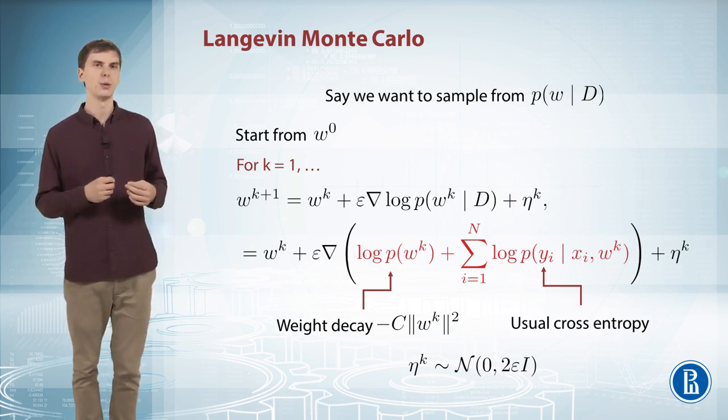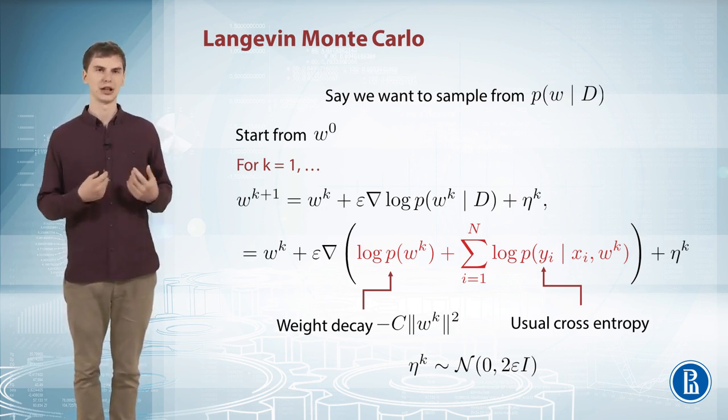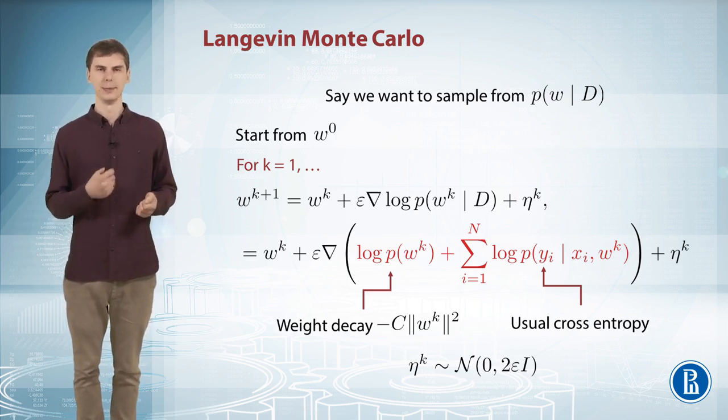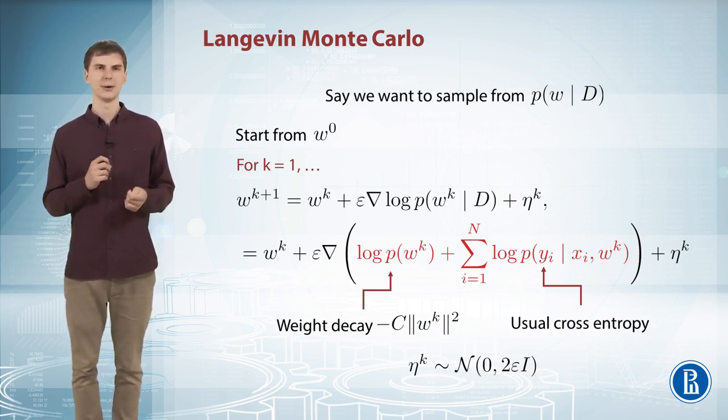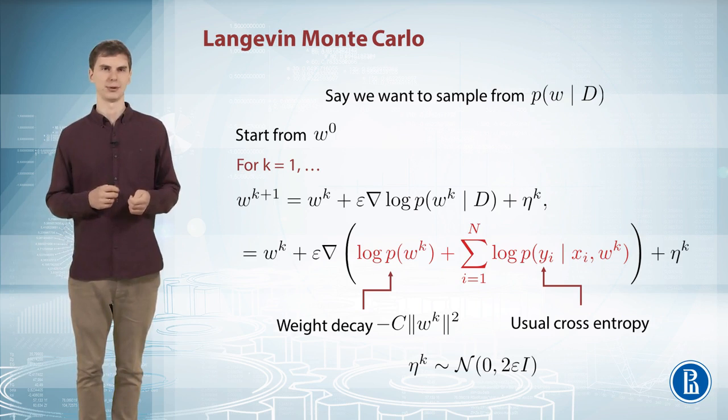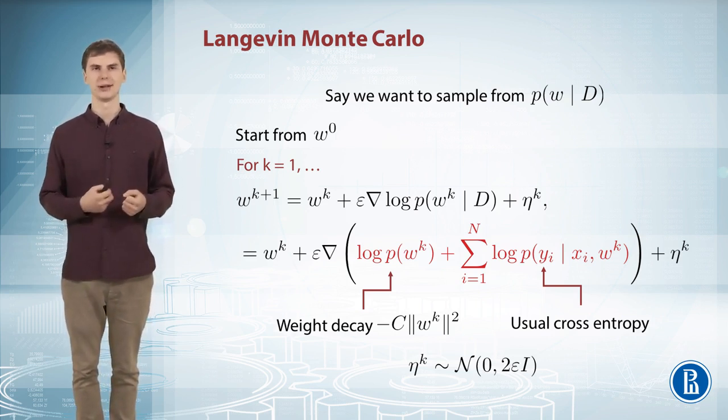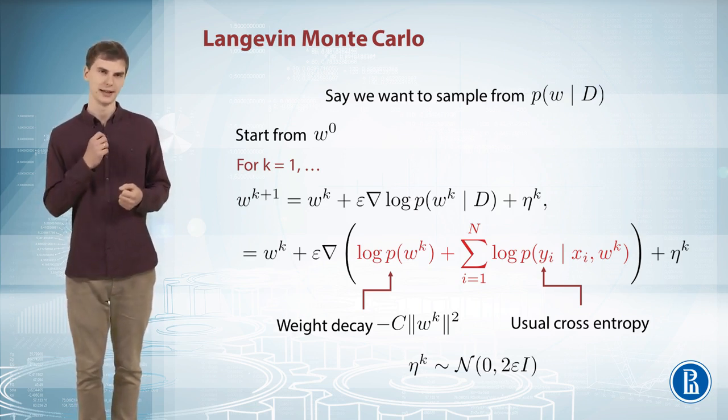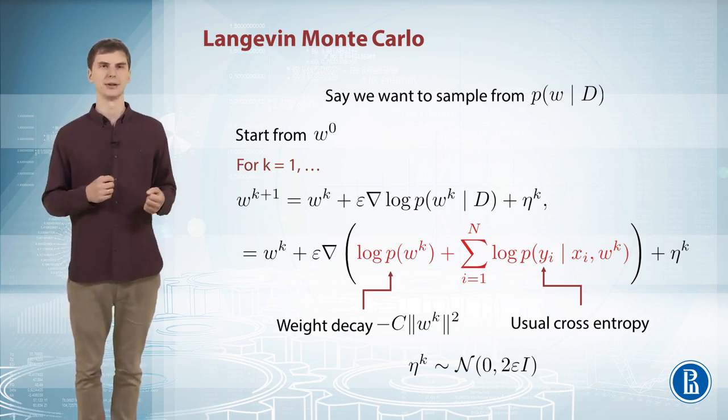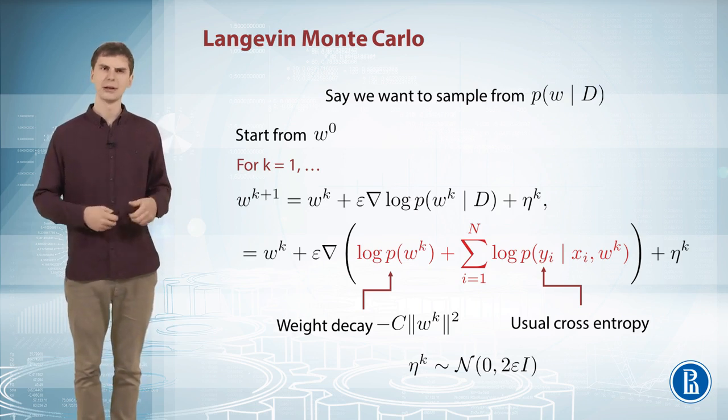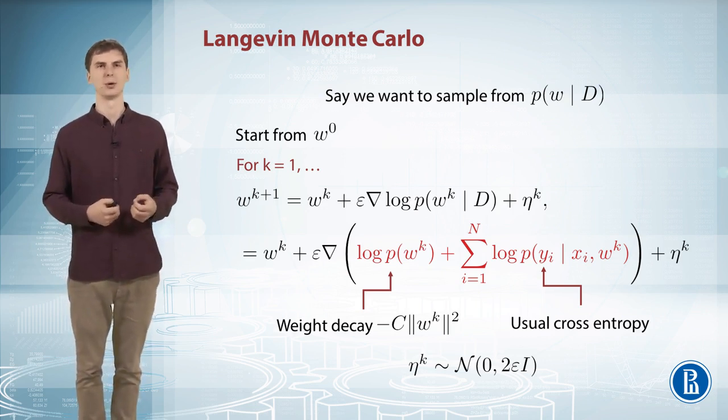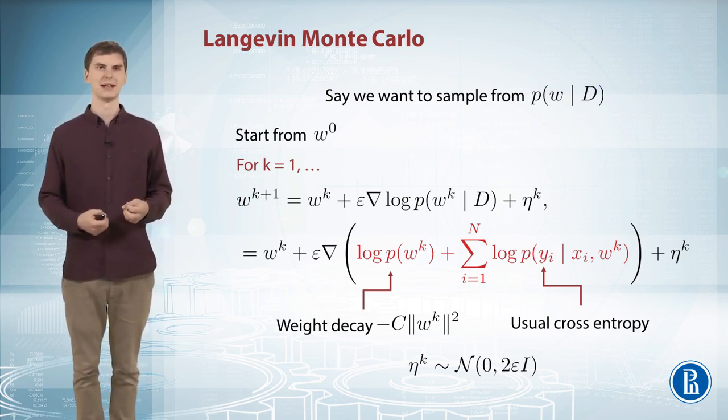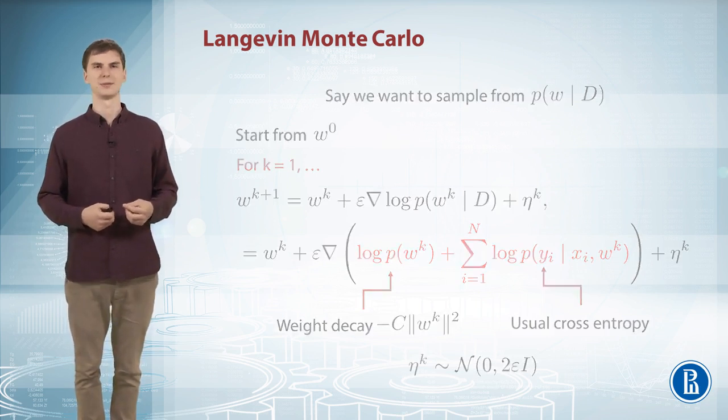But since we want to do some large scale optimization here and to work with mini-batches, we will not use this Metropolis Hastings correction because it's not scalable. And we'll just use small learning rate and hope for the best. So this way we will not actually generate samples from the true posterior distribution w, but it will be close enough if your learning rate is small enough. It's close enough to the infinitely small.